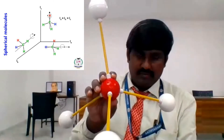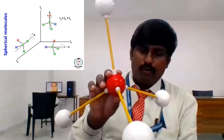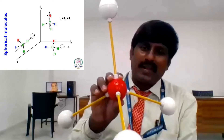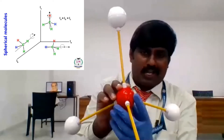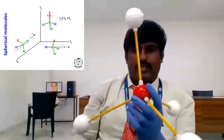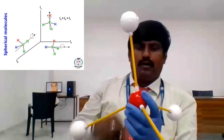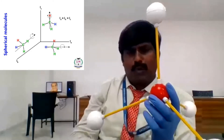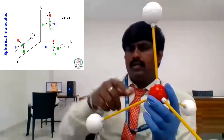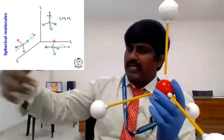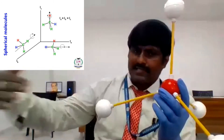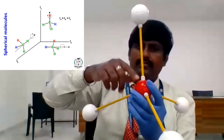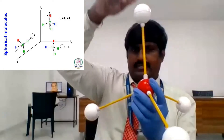It is a methane molecule. Now let us apply our moment of inertia on this molecule. Through this molecule, let us assume the x-axis, y-axis, and z-axis.